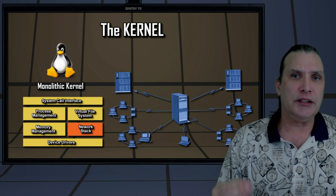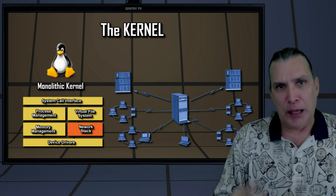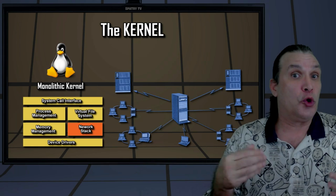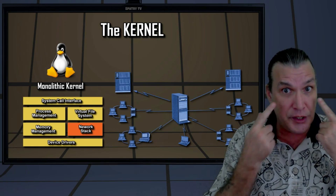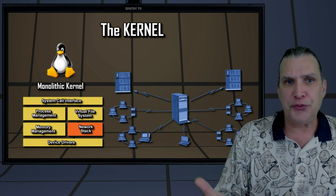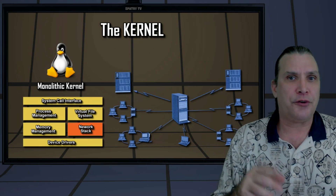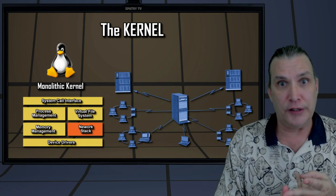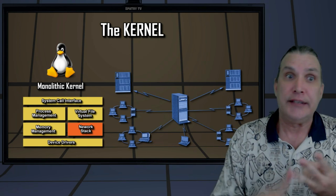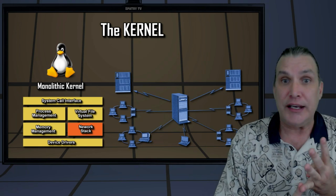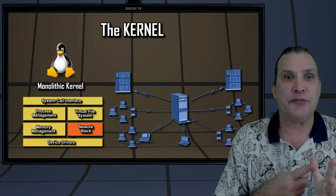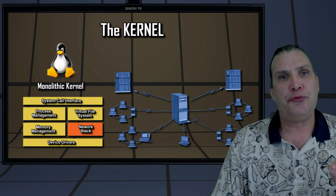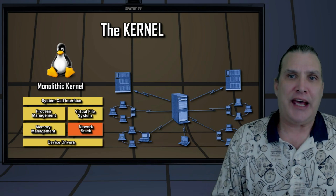There are seven layers to the network stack. The application layer is part of the user space — what you see on the screen and interact with. The next five layers are in the kernel space, which contains a system call interface, protocol agnostic interface, network protocol, device agnostic interface, and the device driver. The seventh layer is your physical hardware.